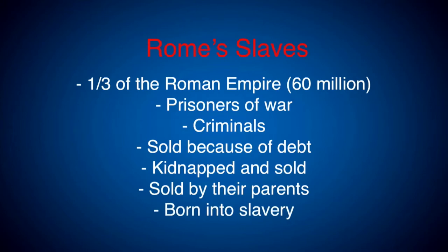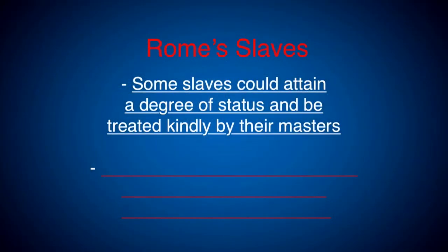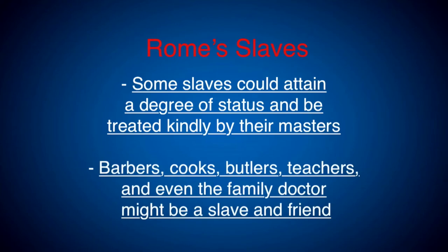Some slaves could attain a degree of status, and many were treated very kindly by their masters. Some were barbers, cooks, butlers, or teachers. Even the family doctor might be a slave. There were those who could buy their freedom, and others were set free. But in many cases, the life of a slave was one of extreme cruelty — condemned to hard labor, beaten, chained, branded on the forehead if they ran away, even crucified. A slave could be killed for any reason without punishment to the owner. One Roman writer said old slaves should be thrown into a dump, and sick slaves thrown away as inefficient tools.